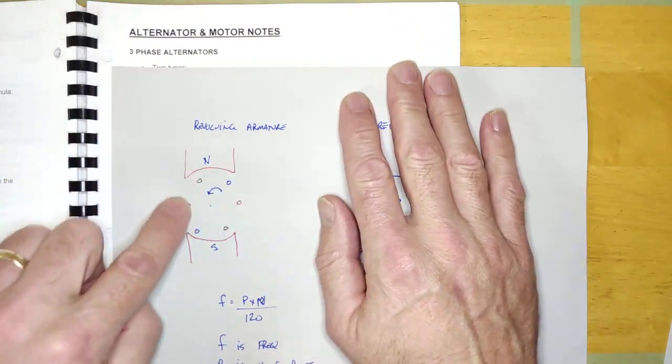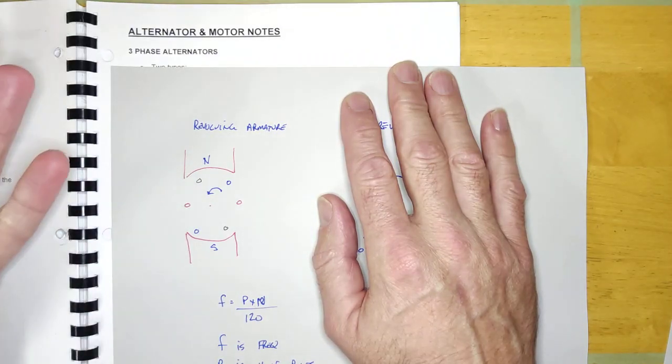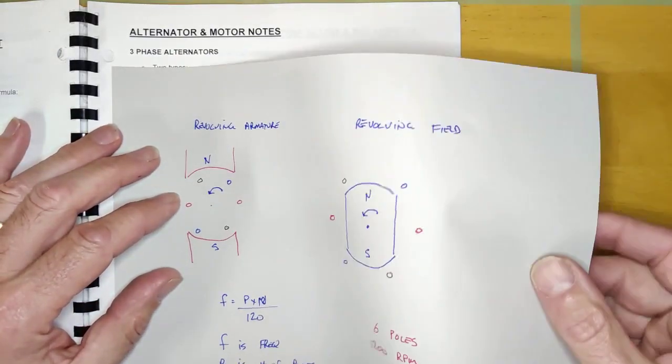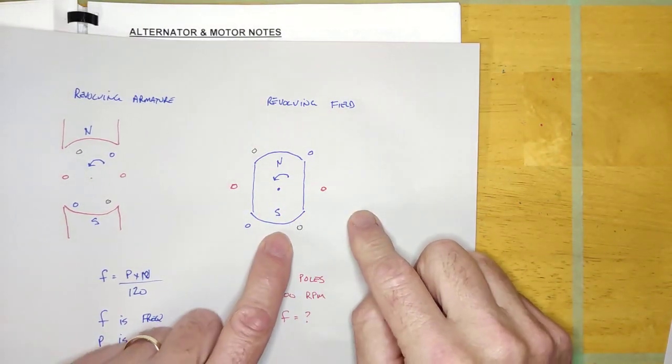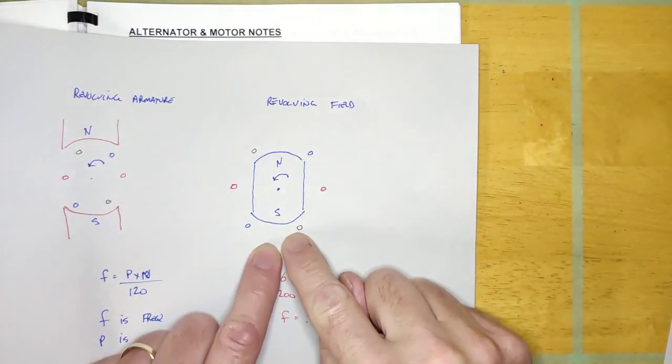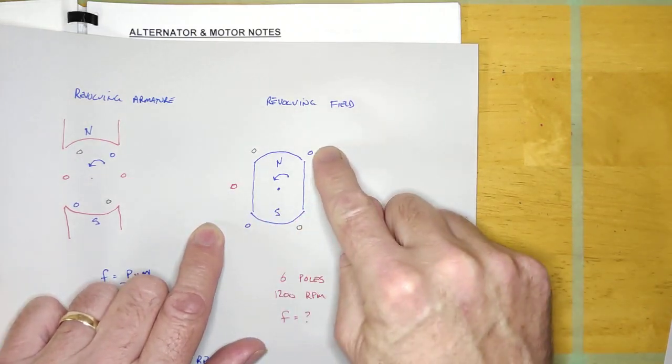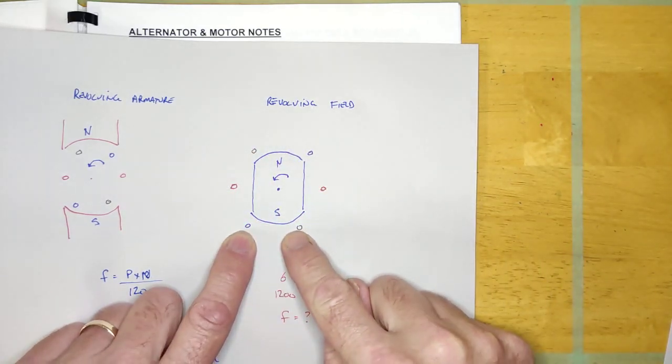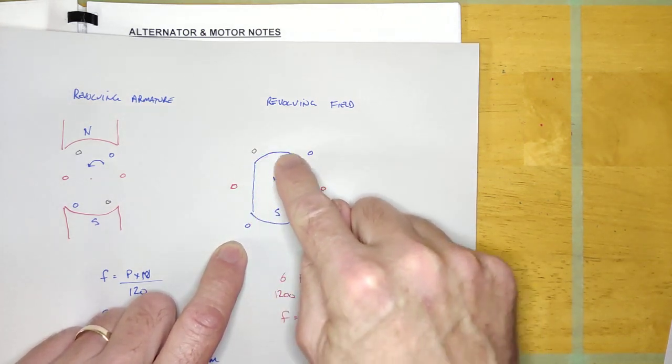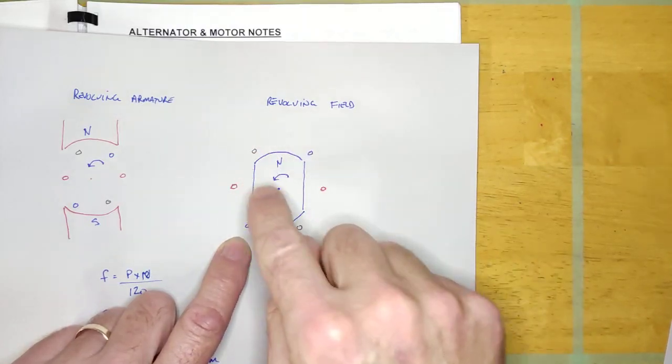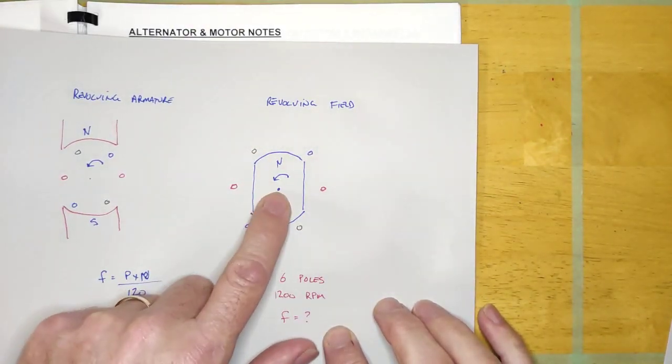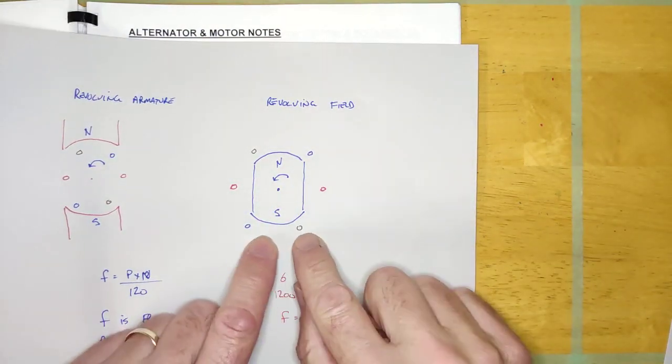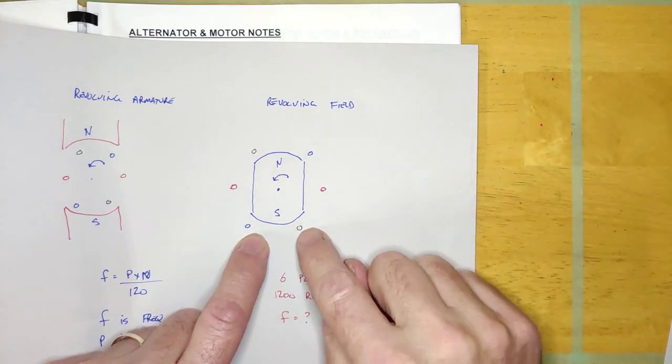That is what's known as the revolving armature type generator. It's used all the time for small machines, but on a larger alternator or generator, what we're probably going to find in real life is the actual conductors are fixed around the outside and we rotate the magnetic field instead. Here's my three phase windings that will have voltage induced into them, and we just put a magnet on the inside and whip that around.